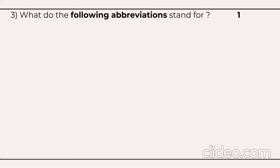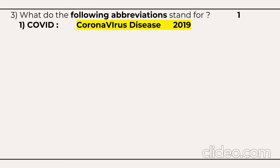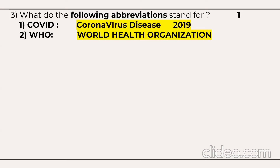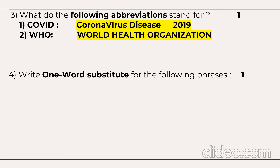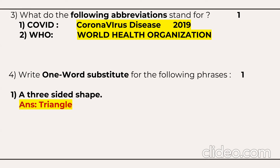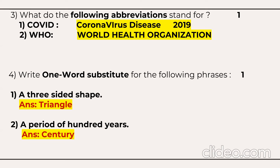Next question covers abbreviations — this is quite a technical question. COVID stands for Coronavirus Disease 2019; WHO stands for World Health Organization — that's one mark. Then one-word substitutes: a three-sided shape is called a triangle; a period of 100 years is called a century. All these questions are for one mark each.